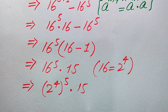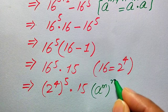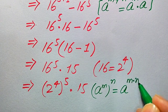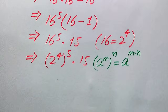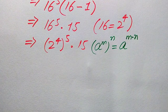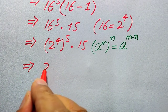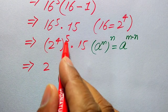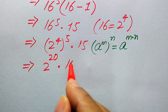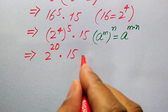We apply another exponential law: a to the power of m, to the power of n, equals a to the power of m multiplied by n. According to this rule, we multiply both exponents: 4 multiplied by 5 gives 20. The expression is now 2 to the power of 20, multiplied by 15.